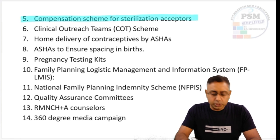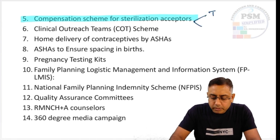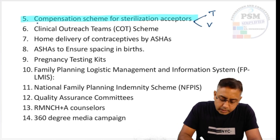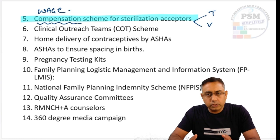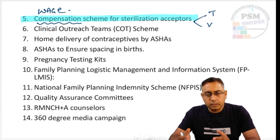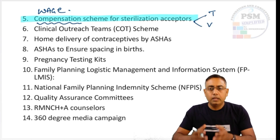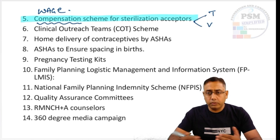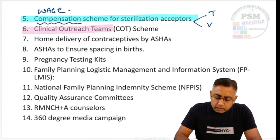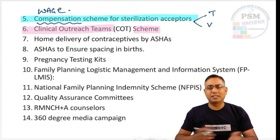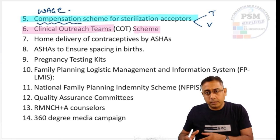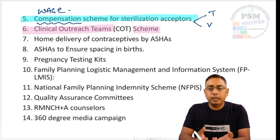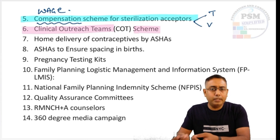There is a compensation scheme for sterilization acceptors — people who get tubectomy or vasectomy done receive wage compensation. Under ESI scheme and the Central Government Health Services scheme, a minimum amount is fixed depending on state policies, and minimum wage compensation is given to tubectomy and vasectomy acceptors. Apart from that, the Clinical Outreach Team scheme has been started — health workers and ANMs will go to field areas, and in some areas doctors may go to promote family planning uptake and address unmet needs.